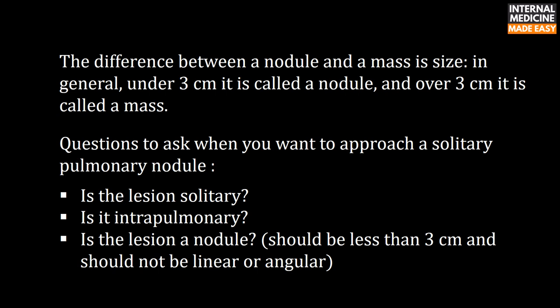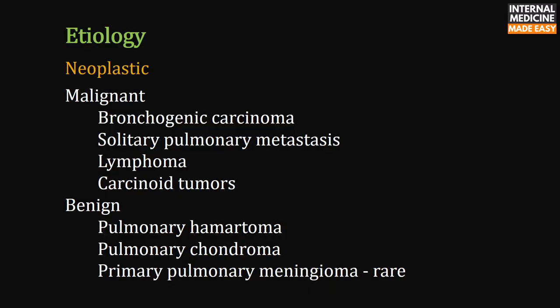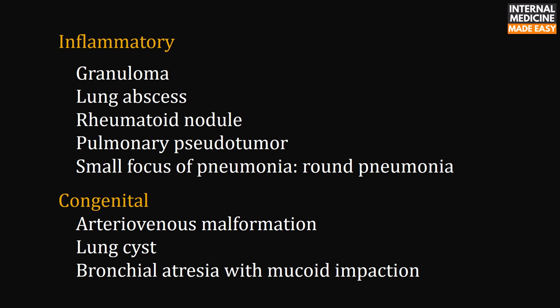The nodule should be less than three centimeters and should not be linear or angular. Etiology — malignant causes include bronchogenic carcinoma, solitary pulmonary metastasis, lymphoma, and carcinoid tumors. Benign causes include pulmonary hematoma, pulmonary chondroma, and rarely primary pulmonary meningioma.